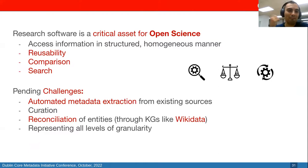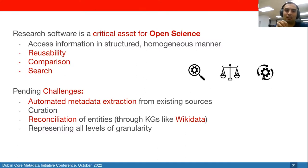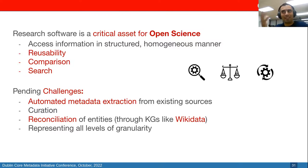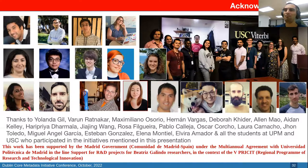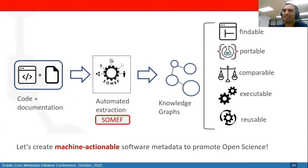In summary, I hope I've convinced you that research software is a very important asset for open science, critical for usability, comparison, and research of existing methods. We need to address key challenges regarding metadata extraction and curation, entity reconciliation, and how to homogenize all these levels of granularity into a single knowledge graph. If we're using non-supervised or machine learning techniques to extract metadata, we should have some sort of confidence score associated with them, represented in the knowledge graph. I'm happy to take any questions.